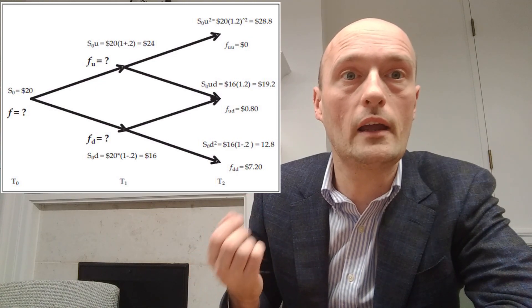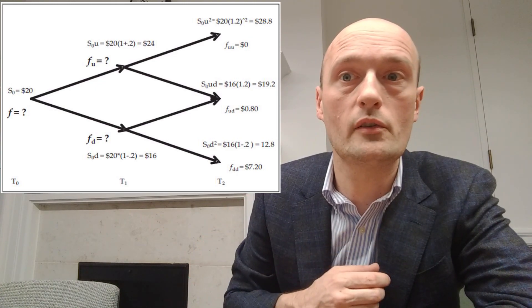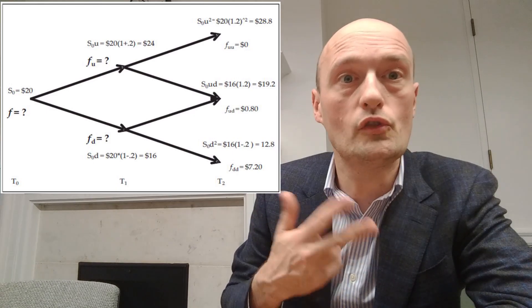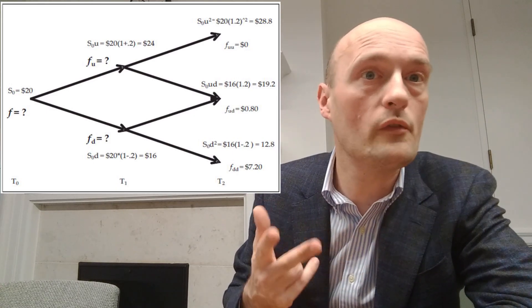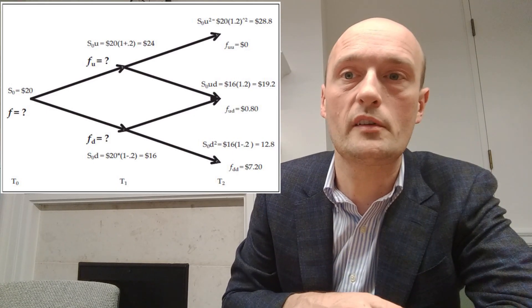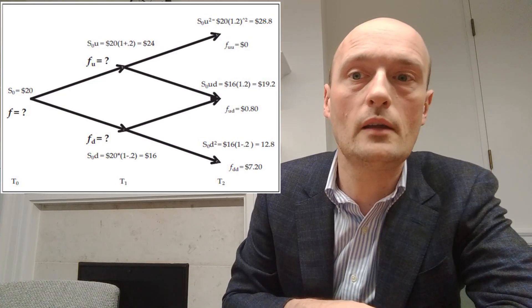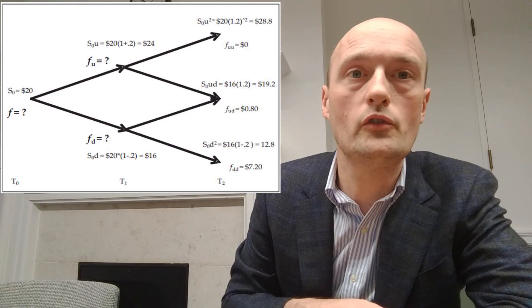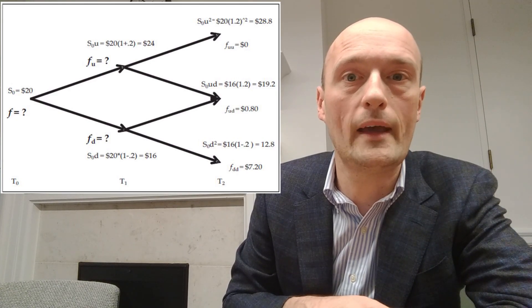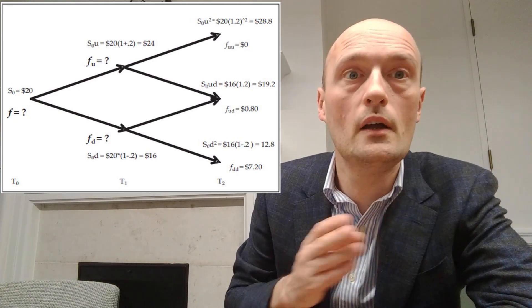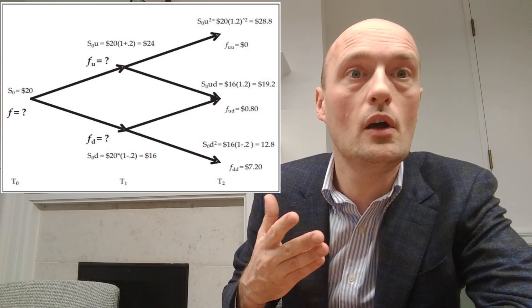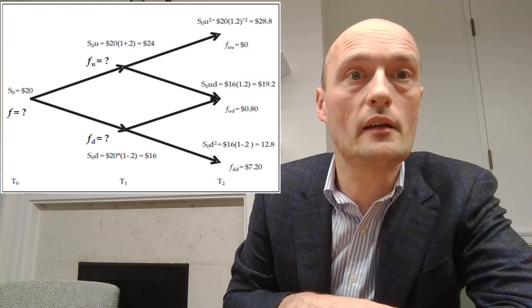So we've now got, last time we just had two possible price outcomes, now we've got three possible price outcomes. So at expiration the underlying can either be at 28.8, 19.2, or 12.8.